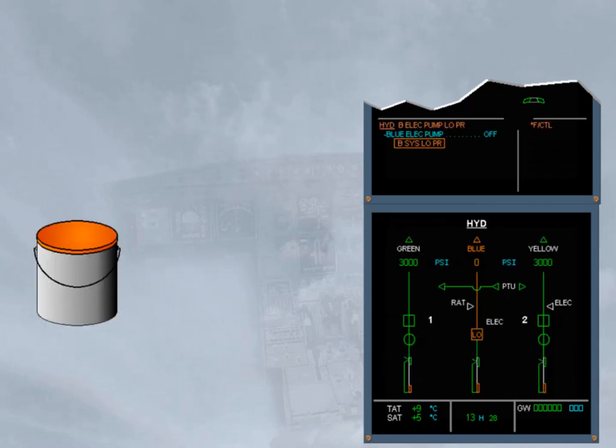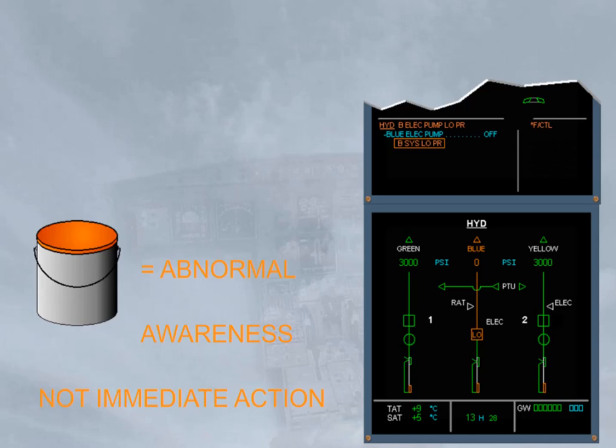Amber color coding is used for abnormal indications that require crew awareness but not immediate crew action. Notice on the engine warning display the amber failure message with a blue action line, and on the SD the amber indications.